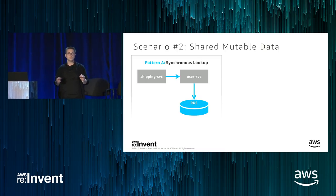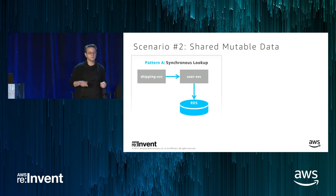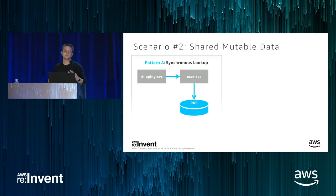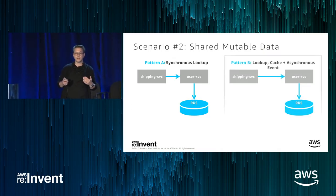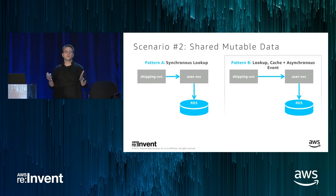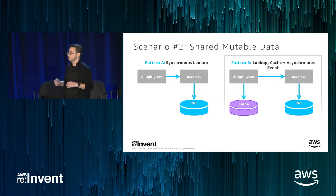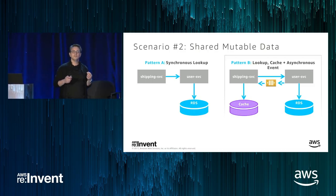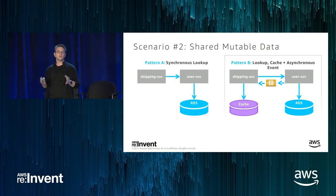The advantage of the synchronous lookup is that we don't have to worry about consistency — the shipping service retrieves data from a single source of truth. The trade-off is that we need two calls to retrieve the data. To improve the performance of this latency-sensitive operation, we add a cache. If we want to improve availability of data in the cache, the shipping service subscribes to events from the user service, and any time a user's address is updated, the shipping service updates its cache.